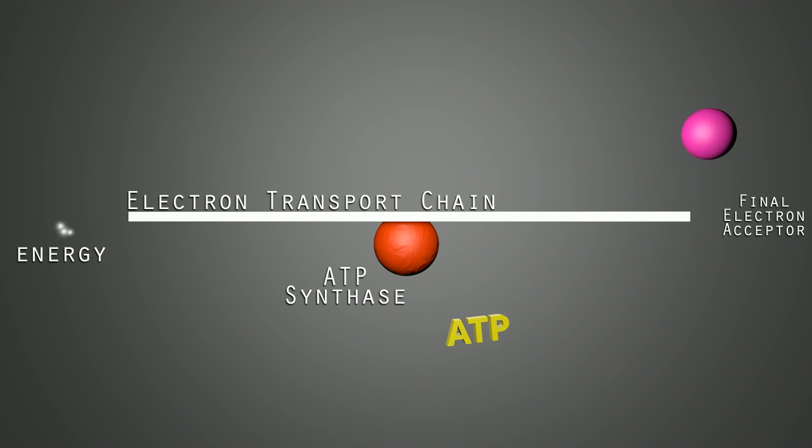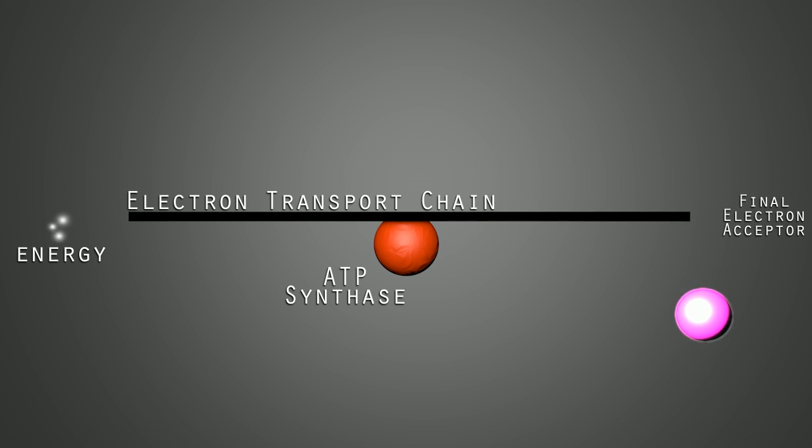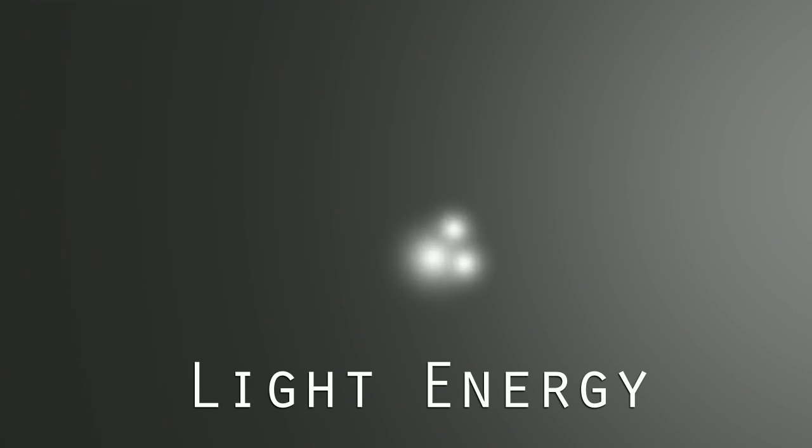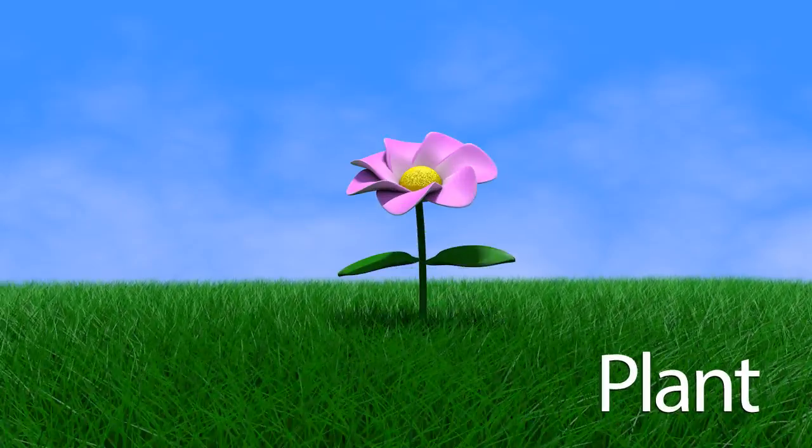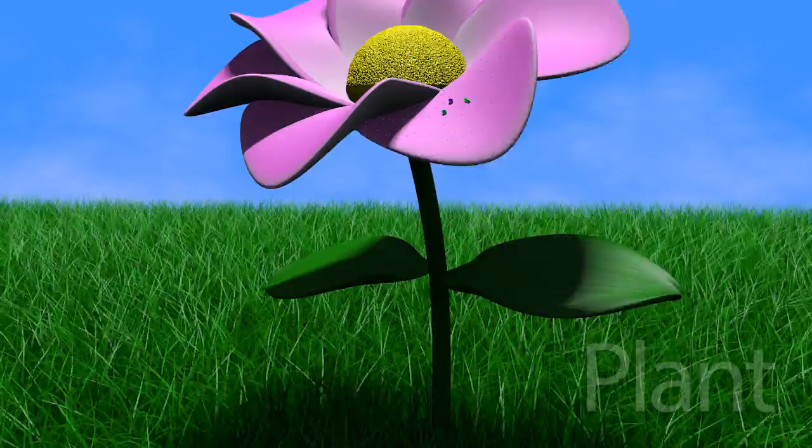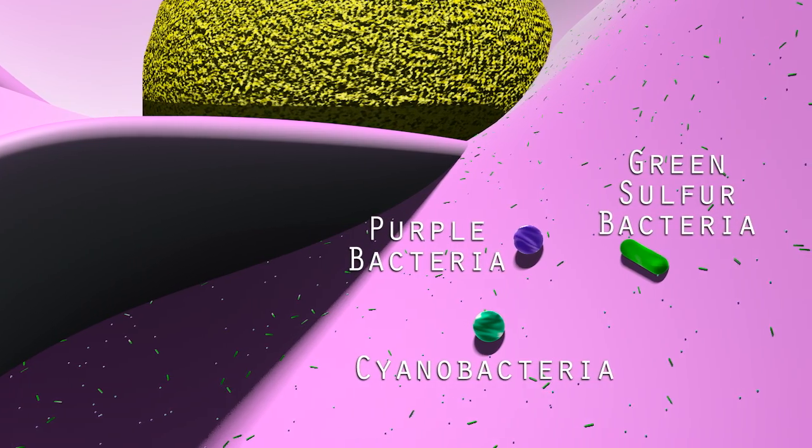The electrons then bind to a final acceptor, producing a waste byproduct. Phototrophs use light as a form of energy to run photosynthesis. The most commonly known phototrophs are plants, but there are also cyanobacteria, green sulfur bacteria, and purple bacteria.